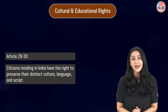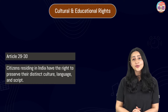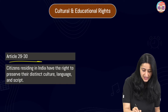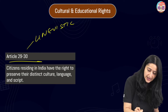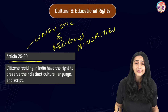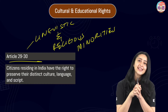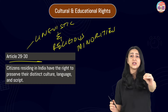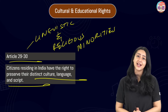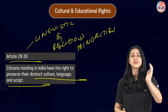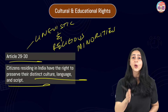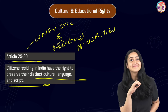Next is the right to cultural and educational rights. Under Articles 29 to 30, the Constitution safeguards the rights of linguistic and religious minorities. Citizens residing in India have the right to preserve their own distinct culture, language, and script. The state cannot deny admission to any person irrespective of their race, religion, caste, or language into any educational institutes run by it. Additionally, minorities are given the right to form and govern their own educational institutions.